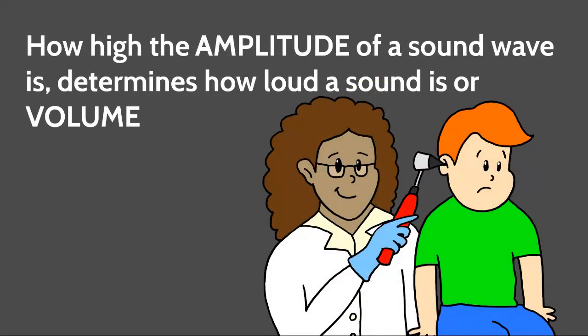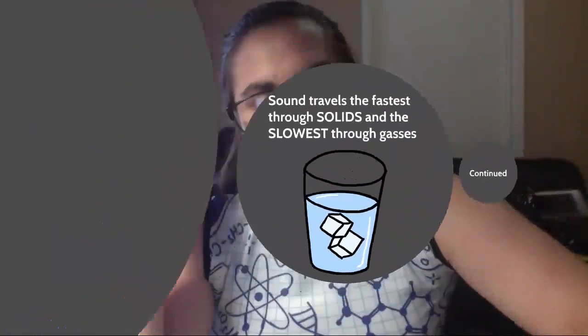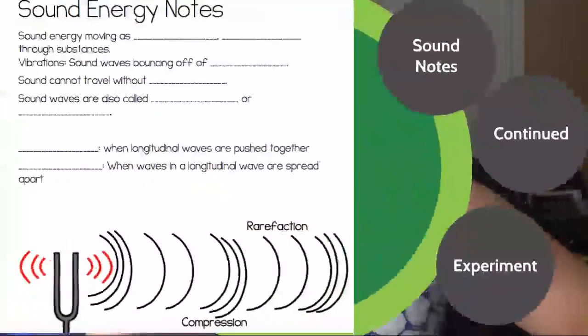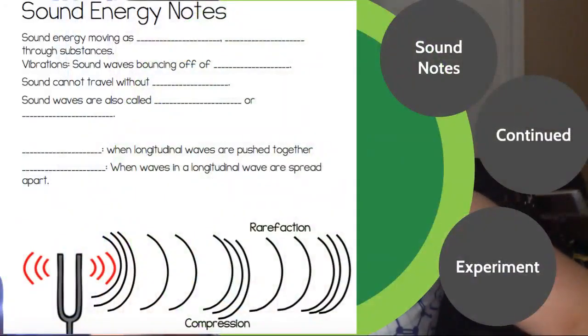How do we know how loud it's going to be? It's the amplitude of that sound. Amplitude means how big that sound wave is. If I have a little itty-bitty sound wave, it's going to be very quiet. If I have a huge sound wave, it's going to be very loud. That ends our notes section. I'm going to record another video with our Screaming Cups Lab in just a second, so thank you for tuning in and look for the next video.